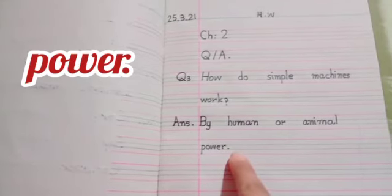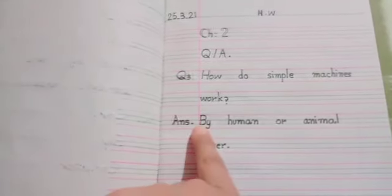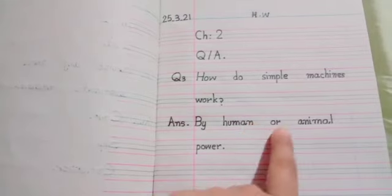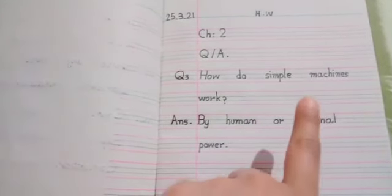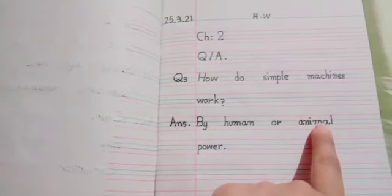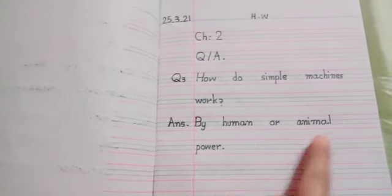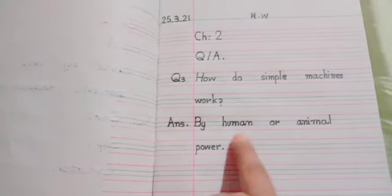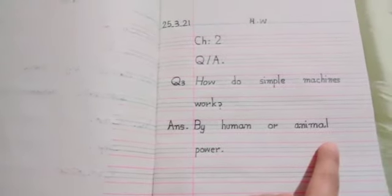Answer read: By human or animal power. Simple machines work by human, means person, or animal, means animals. Human or animal ki power means strength. Human and animal ki strength se work karti hai.